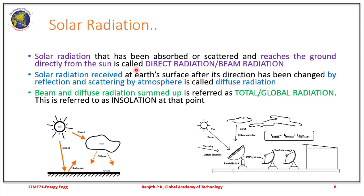The solar radiation that has been absorbed or scattered and reaches the ground directly from the sun is called direct radiation or beam radiation. The radiation received at the earth's surface that is reflected and scattered is called diffuse radiation. Beam and diffuse radiation summed together is referred to as total or global radiation, sometimes called insolation at that particular point.